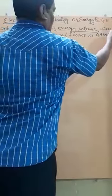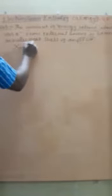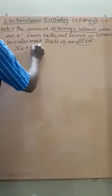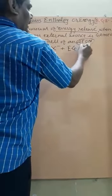The definition: it is the amount of energy released when an electron from an external source is gained in the outermost shell of an atom. Remember, the electron will be gained in the outermost shell of an atom. In ionization enthalpy, energy is required, but here energy is released.